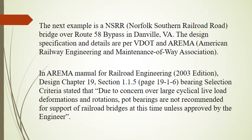The next example is an NSRR — Norfolk Southern Railroad — bridge over Route 58 Bypass in Danville, Virginia. The design specification and details are per AREMA — American Railway Engineering and Maintenance-of-Way Association. In the AREMA Manual for Railroad Engineering, 2003 Edition, Design Chapter 19, Section 1.1.5, page 1916, the bearing selection criteria state that due to concern over large cyclical live load deformations and rotations, pot bearings are not recommended for support of railroad bridges at this time unless approved by the engineer.